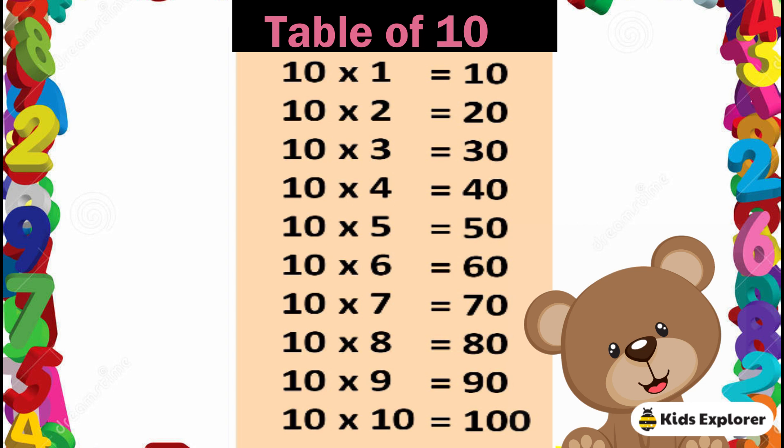Table of 10. 10 1's are 10, 10 2's are 20, 10 3's are 30, 10 4's are 40, 10 5's are 50, 10 6's are 60, 10 7's are 70, 10 8's are 80, 10 9's are 90, 10 10's are 100.